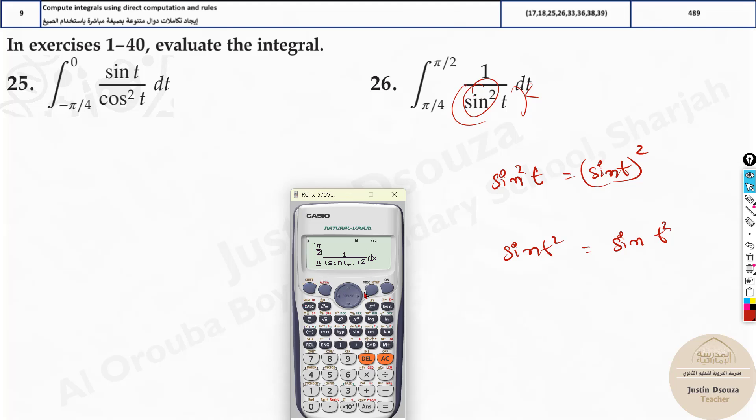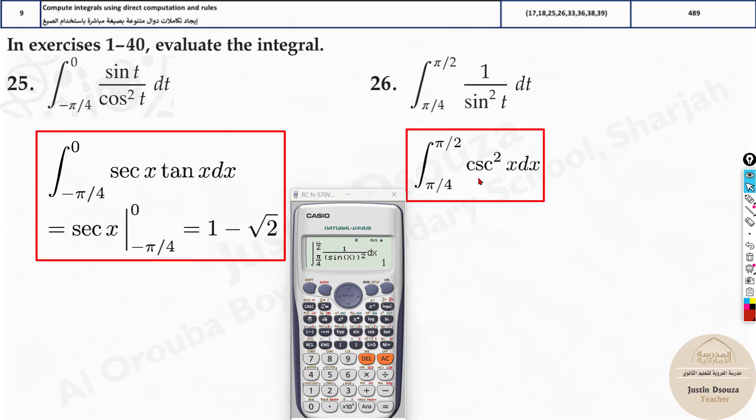Changing the mode to radian is very simple: shift, mode, and then you need to press 4. So this directly gives you the answer. The answer must be 1, and that is 1.